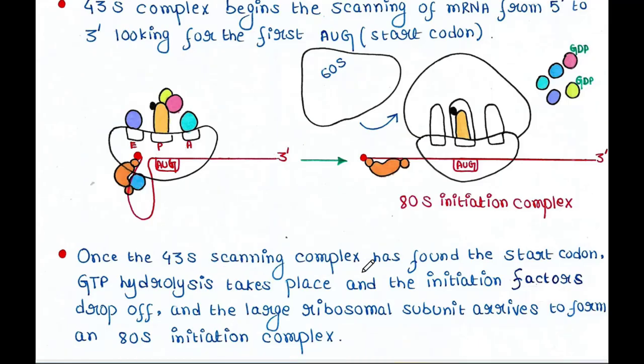Now, once the 43S scanning complex has found the start codon, GTP hydrolysis takes place and the initiation factors drop off, and the large ribosomal subunit arrives to form an 80S initiation complex. So basically, once the ribosome finds the start codon, all the initiation factors will be released and GTP hydrolysis occurs to mediate this event.